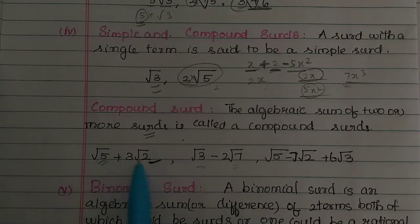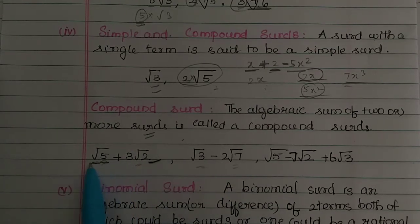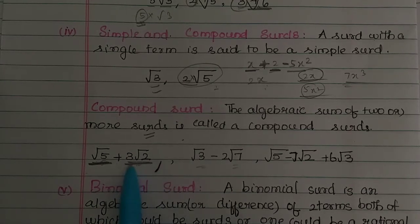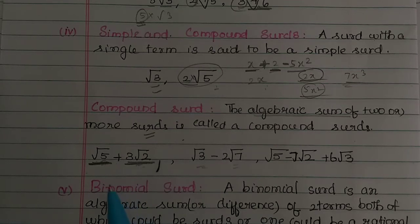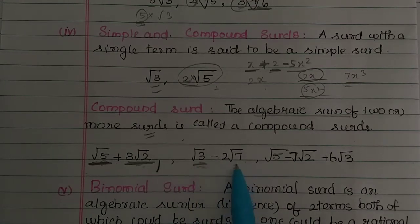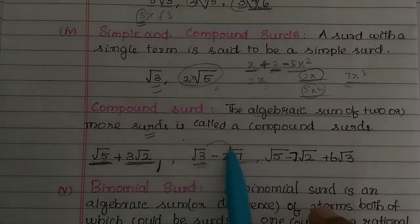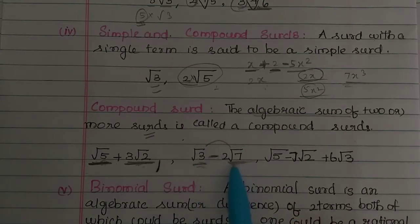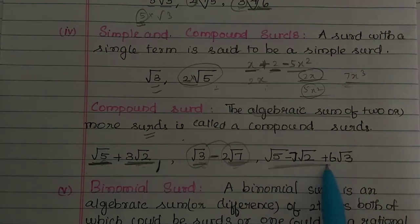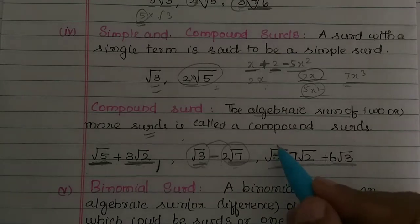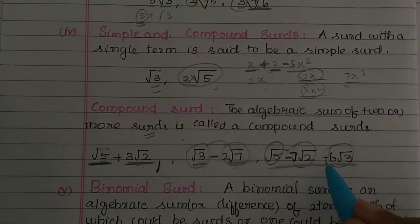For example, root 3 minus 2 root 7 — here root 3 and root 7 are two terms, so it is a composite surd. Also, root 5 minus 7 root 2 plus 6 root 3 has three terms — the first term, the second term, and the third term. These are composite surds with plus and minus terms.